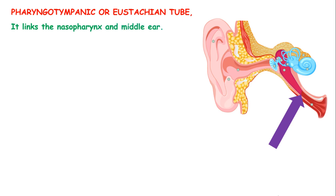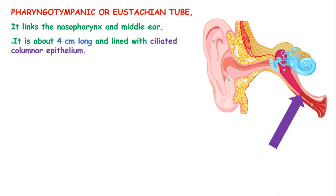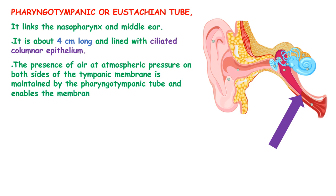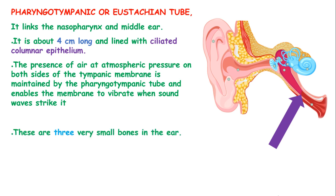The pharyngotympanic tube is a tube which links the nasopharynx and the middle ear. It is about 4 cm long in an adult and lined with ciliated columnar epithelium. The presence of air at atmospheric pressure on both sides of the tympanic membrane is maintained by this tube, enabling the membrane to vibrate when sound waves strike it. This tube is normally closed and opens when there is a pressure difference.